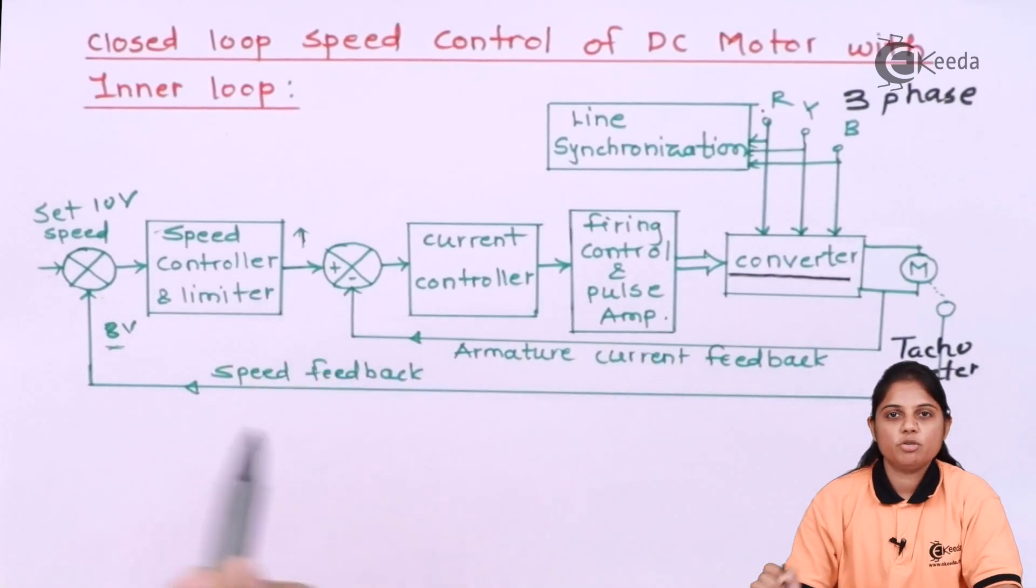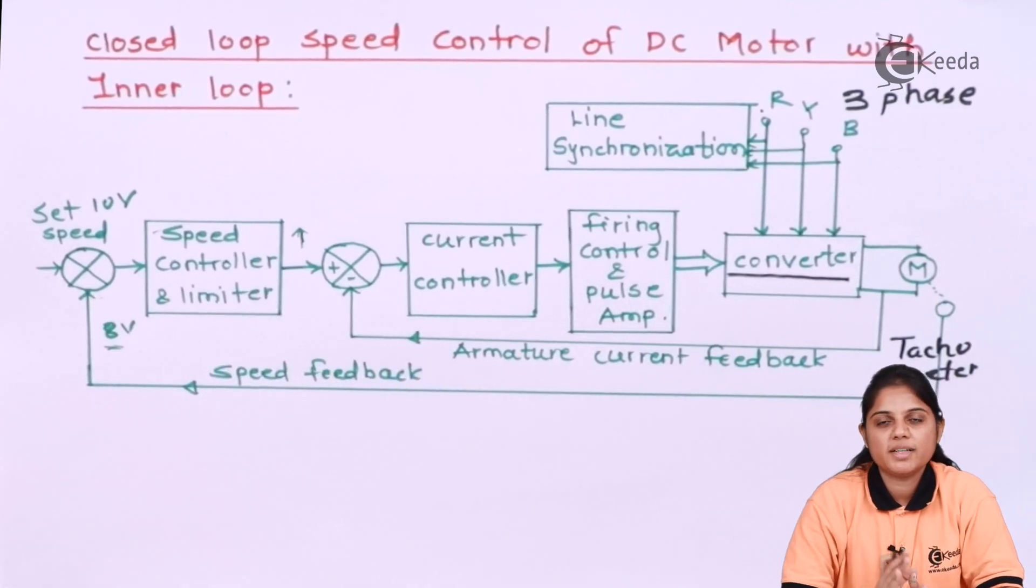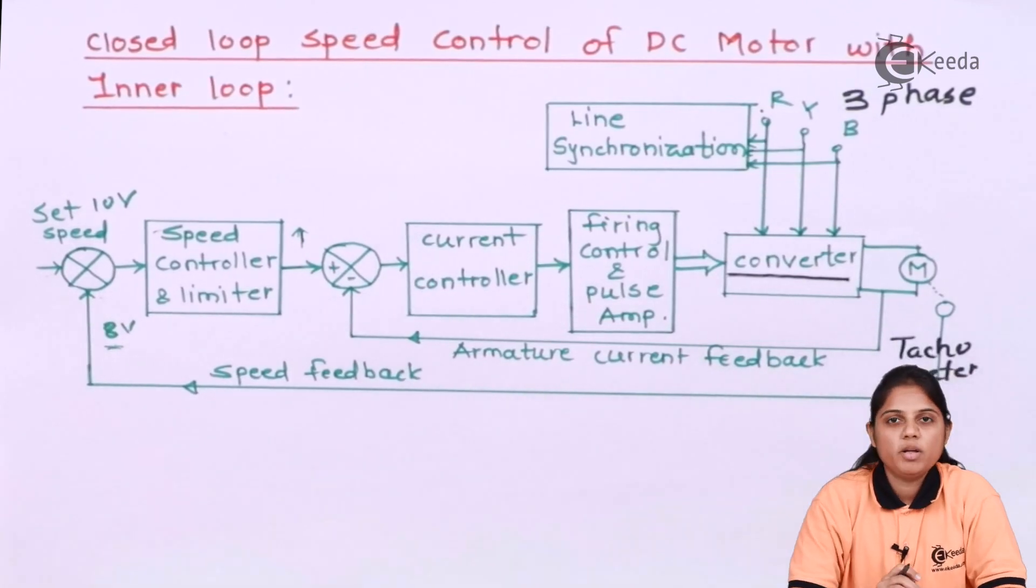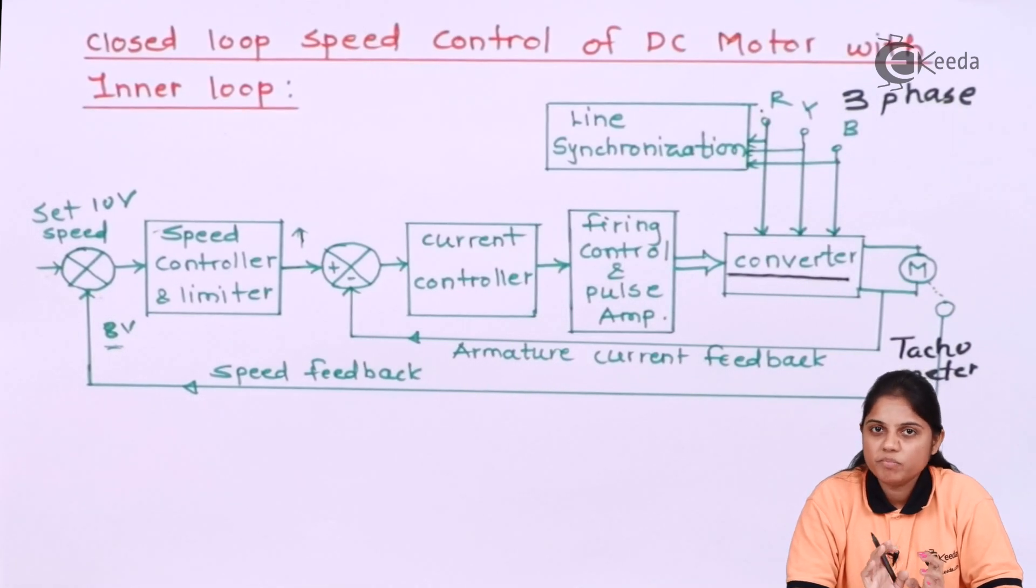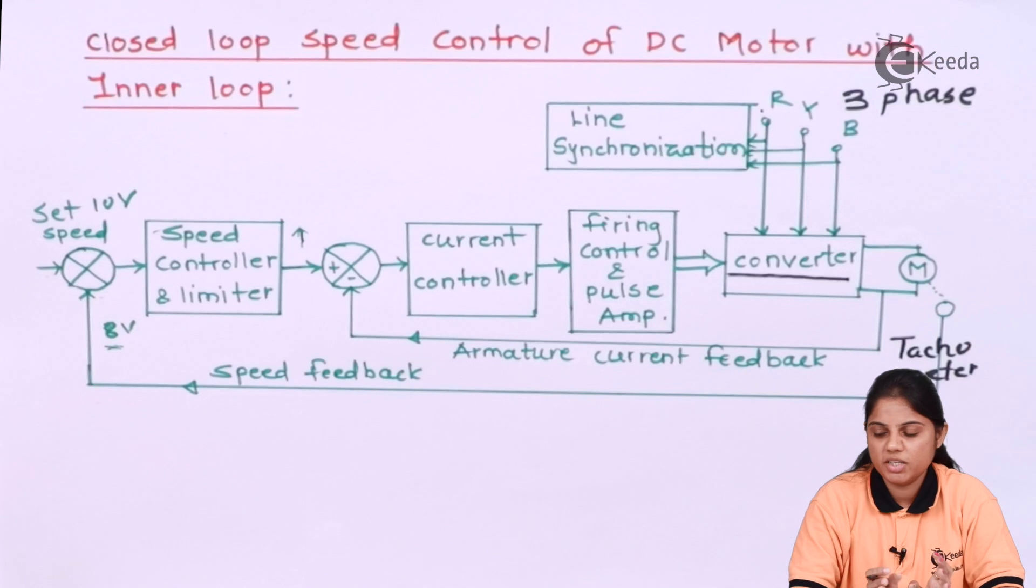So to avoid that, you should have one more parameter other than speed that can be measured because even though if you connect the load, your speed will vary, whether it will increase or decrease, but your armature current will remain as it is. It will not change.